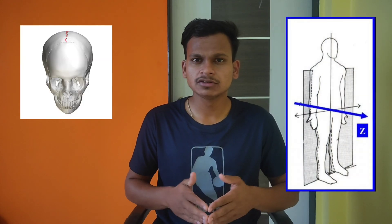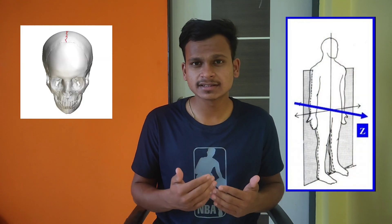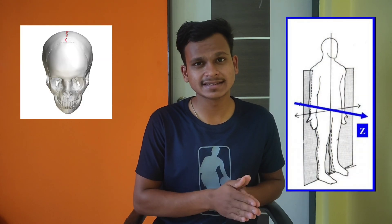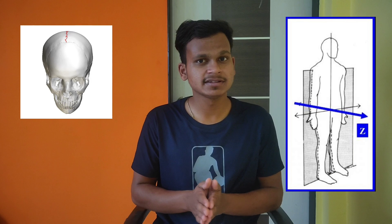The sagittal axis is an axis which lies parallel to the sagittal suture of the skull. The movements which take place around the sagittal axis take place in the frontal plane. It includes movements such as abduction and adduction of the extremities.